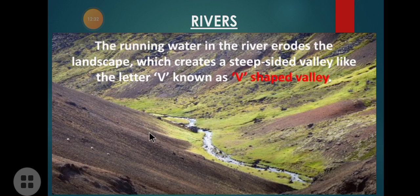Rivers generally originate from mountains or hills. The place of origin of a river is known as its source and the place where it ends is called the river mouth. One change the river water can make to the earth's surface is the V-shaped valley. These steep-sided valleys with a small river at the bottom are formed because of erosion by river water, which erodes the mountain surface and forms this V-shaped picture.